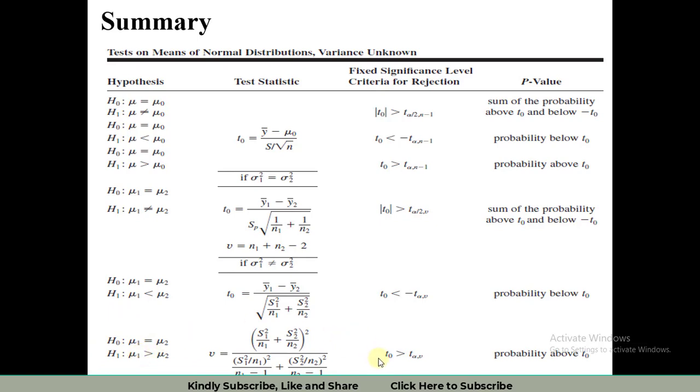And associated with this criteria, the rejection criteria is t0 greater than t alpha v, where v is the degree of freedom.